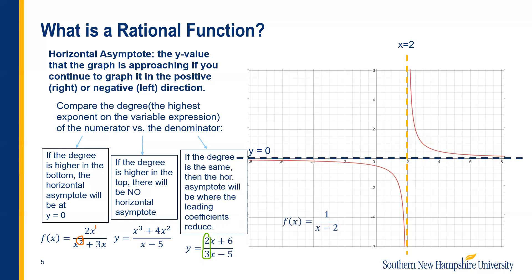This makes sense if you plug in a really big number. Imagine plugging in a million: in the numerator you'd have basically 2 million, and in the denominator you'd have just under 3 million. So you'd basically have 2 million over 3 million, which reduces to two-thirds.